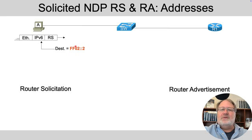Router R1 knows the prefix and prefix length on the link, and when it sends the RA message back, it lists this prefix and prefix length. The host then adds a route for this prefix and prefix length to implement the idea that all local packets are sent directly. However, when it adds that route, it does not list the router's address as the next hop — it lists a notation that says 'on link,' which tells host A that packets matching this destination prefix should be sent directly because they are on-link.